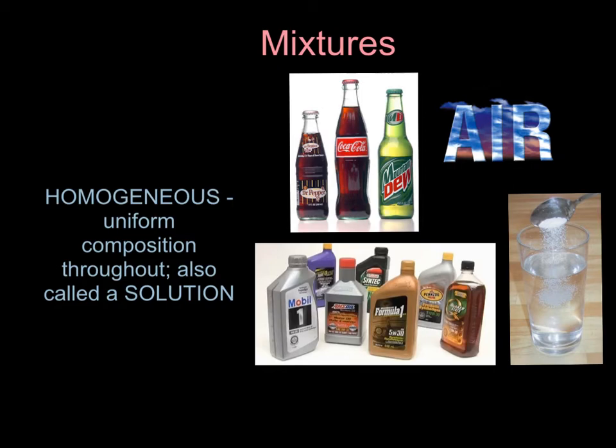One type of mixture is a homogeneous mixture. Homogeneous mixtures have a uniform composition throughout — this means if you look at it, it doesn't look any different from the top to the bottom. Some examples are soda, air, and motor oil. Another name for a homogeneous mixture is a solution.